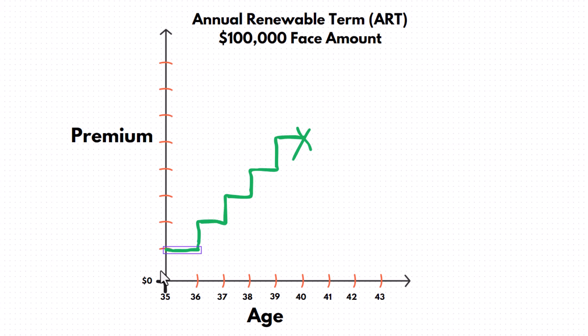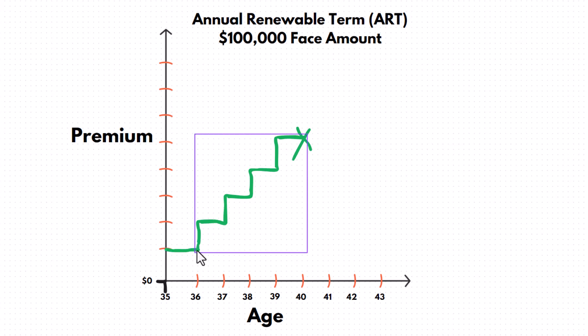Say this guy gets a policy at age 35, and then it costs X amount of money. He has the policy for a year, at which point he can choose to renew. It goes up to this new rate, and then he can have it for another year. Then he renews and there's a slightly higher premium, and then it keeps going on.